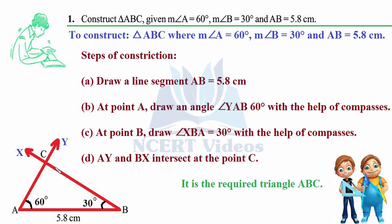All angles within a triangle measure 180 degrees, which we will see in questions as well. Steps of construction: first, we draw the only line segment given, AB of 5.8 centimeters. Since both angles A and B are given and the side AB lies between them, we can confirm this triangle will be constructed under the angle-side-angle criterion.